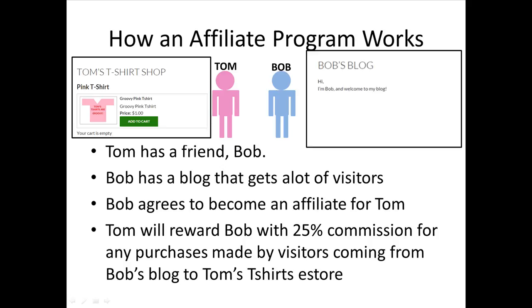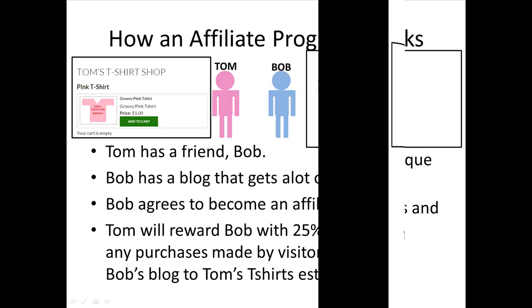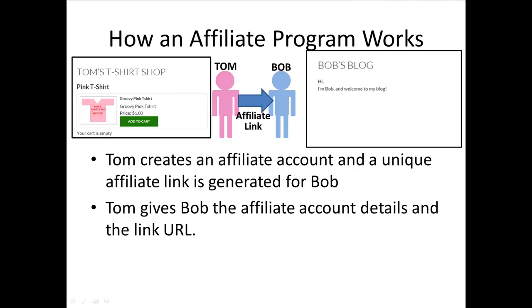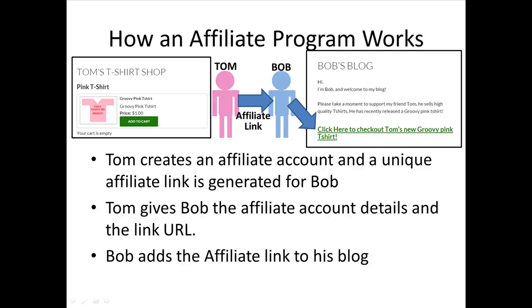Bob agrees to become an affiliate for Tom. So Tom decides he'll reward Bob with a 25% commission for any purchases made by visitors coming from Bob's blog to Tom's t-shirt e-store. Tom creates an affiliate account and a unique affiliate link is generated for Bob. Tom gives Bob the affiliate account details and the link URL. Once Bob has the affiliate link URL, he adds this link to his blog.